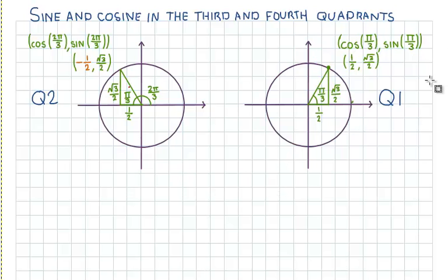In the past few videos we've been looking at defining sine and cosine. We started off with defining them with a right angle triangle and then we started defining them as points on the unit circle.